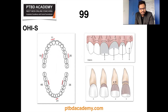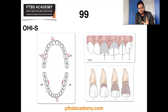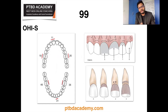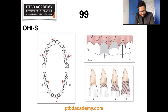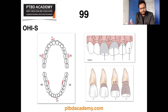Moving on to OHI-S and DMFT indices. In the OHI simplified index, six teeth and surfaces are scored. The debris index and calculus index scoring methods are shown. For the debris index: score 0 — no debris or staining present; score 1 — soft debris covering not more than one third of the tooth surface, or presence of extrinsic stains without debris regardless of surface area covered.